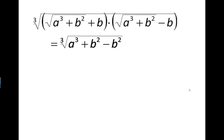And what we get is very simple, the cube root of a cube plus b square minus b square, and that simplifies to the cube root of a cube. That simplifies further to just a. And the problem is solved. Thanks for watching.